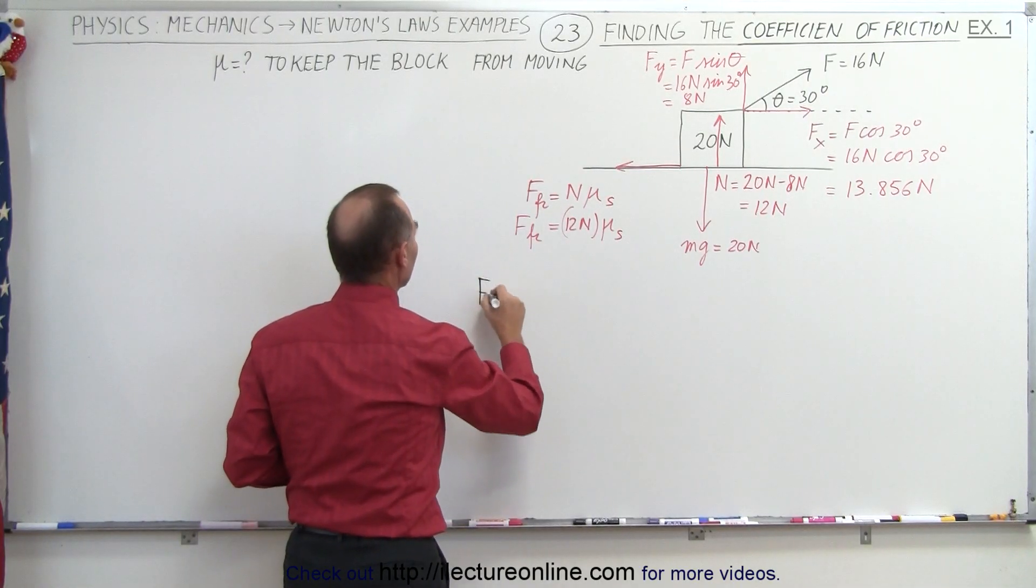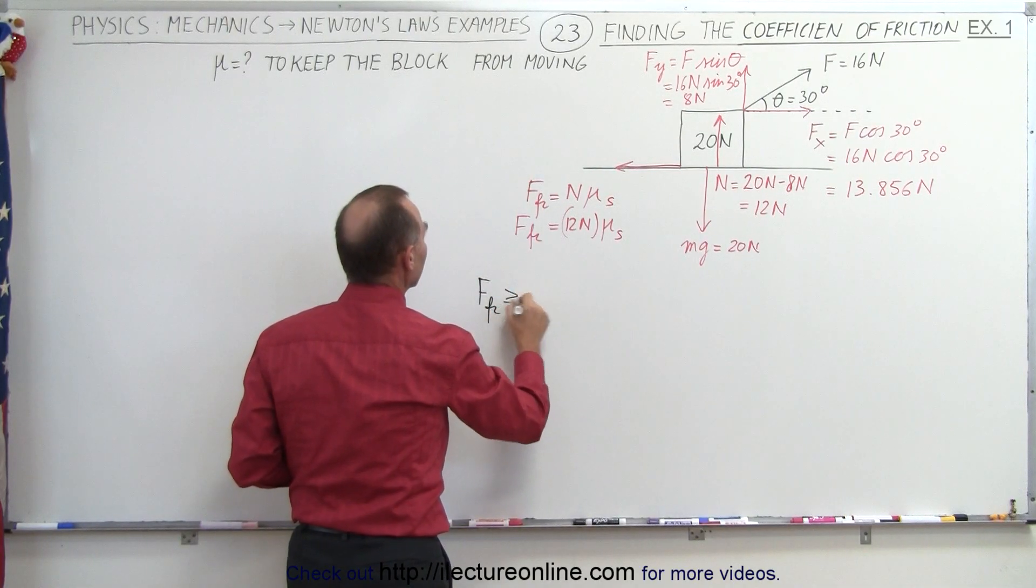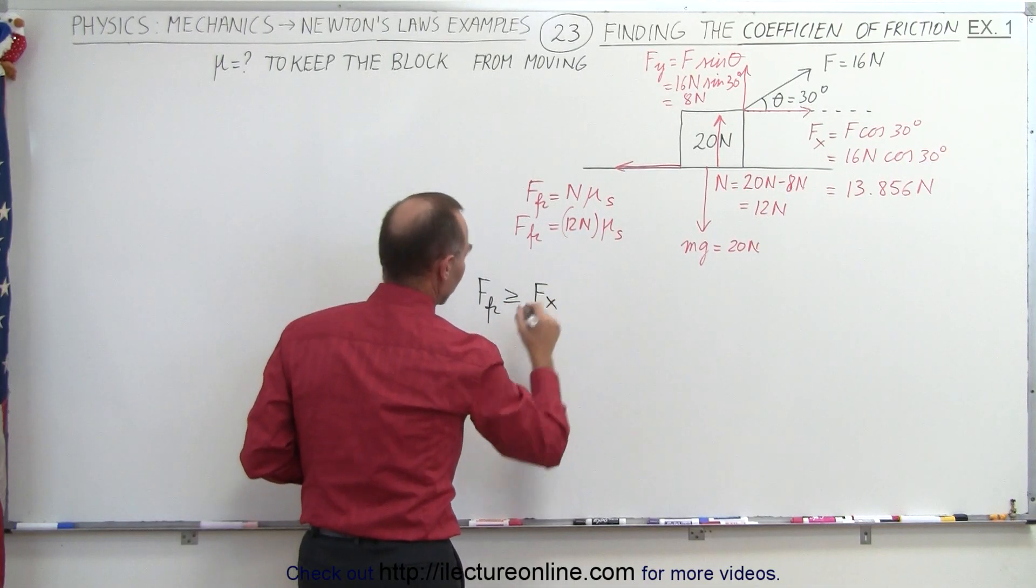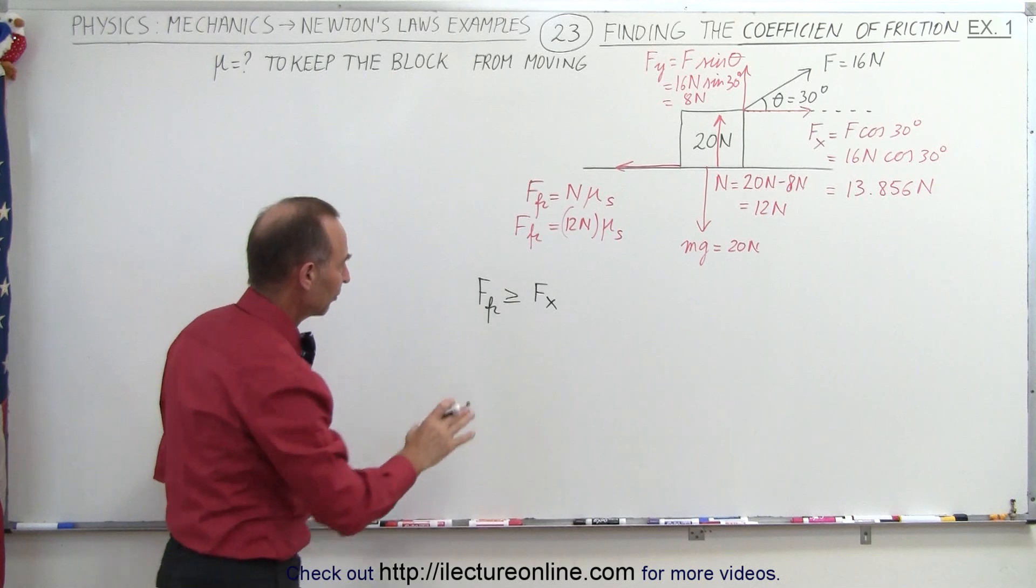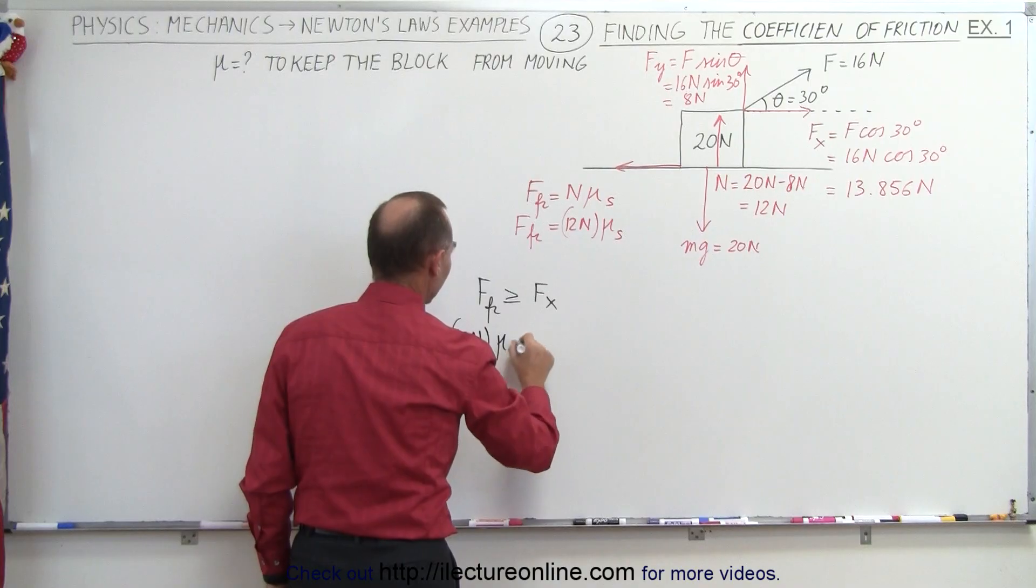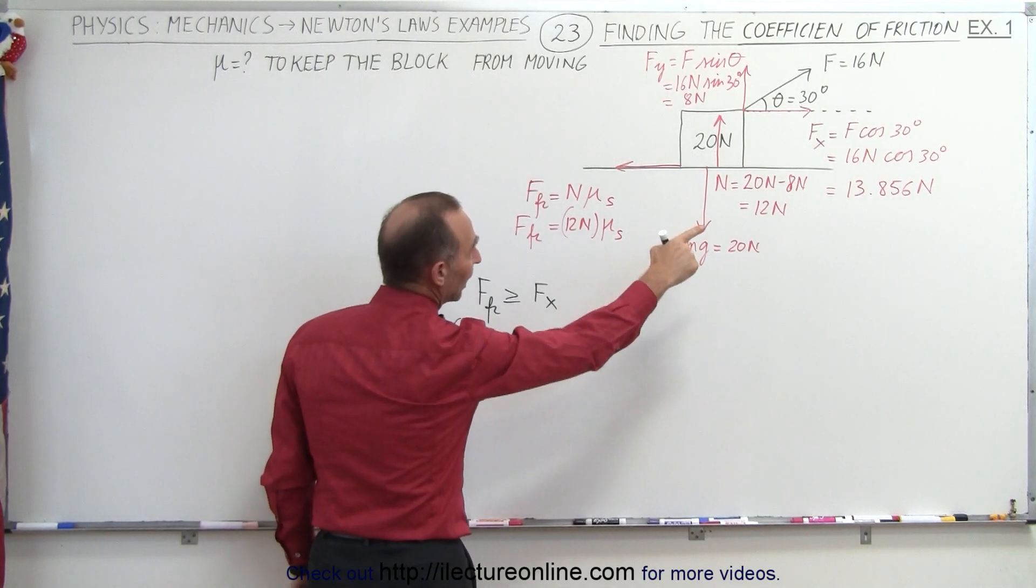What we want is for the friction force to be greater than or equal to the force in the x direction that's applied. Our friction force is equal to 12 newtons times the coefficient of static friction, and that must be greater than or equal to F_x, which is 13.856 newtons, in order to keep the block from sliding.